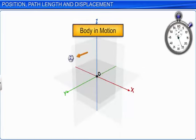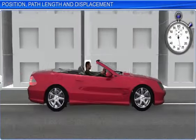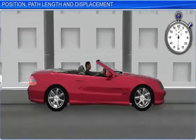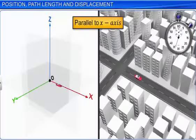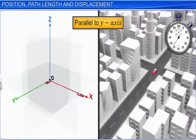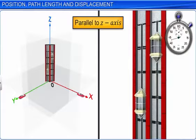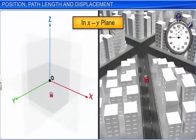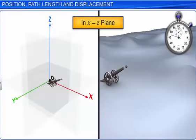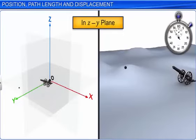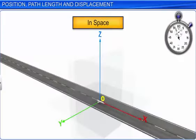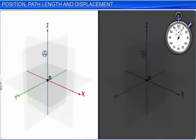The motion of a body with respect to the frame of reference could be parallel to the X axis, parallel to the Y axis, or parallel to the Z axis. When the coordinates don't change with time, the body is said to be at rest with respect to the frame of reference.